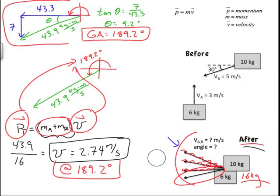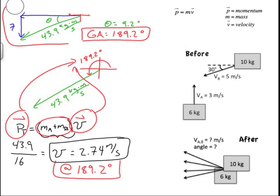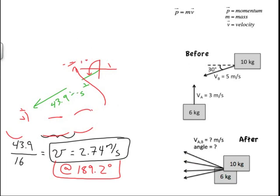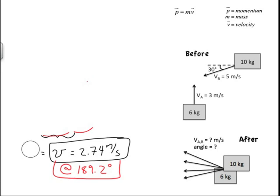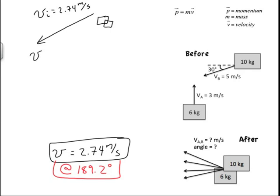All that's left is dealing with what happens after the collision when friction is involved. Recall that friction is an external force, so we can no longer use conservation of momentum. The two boxes are stuck together with an initial velocity of 2.74 m/s, they slide, and come to a final velocity of zero. The problem asks us to find delta d — how far they slide — and at what angle, which is described by 189.2 degrees.